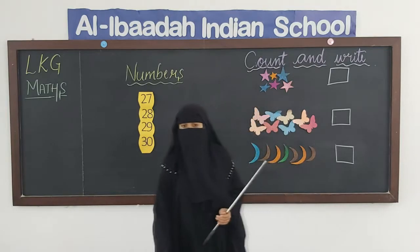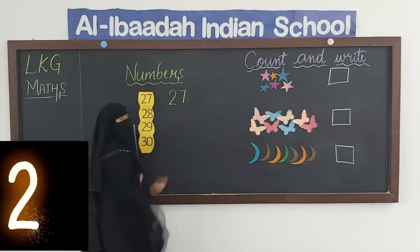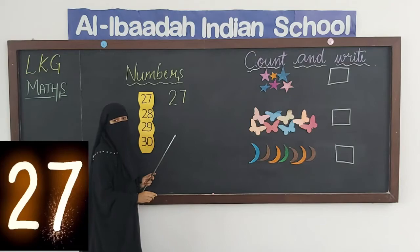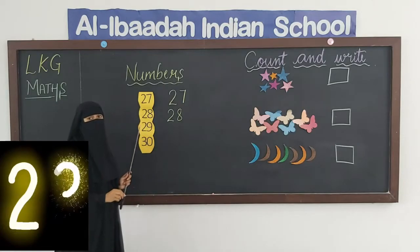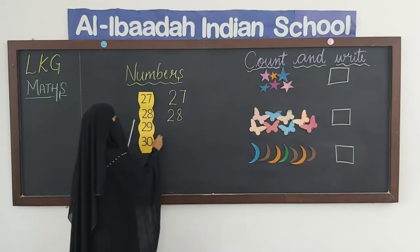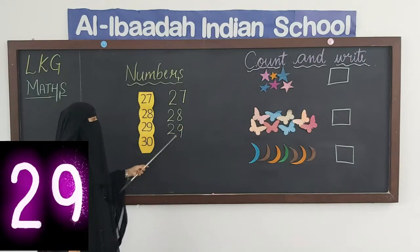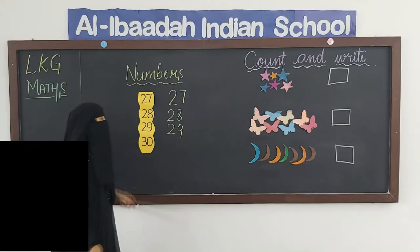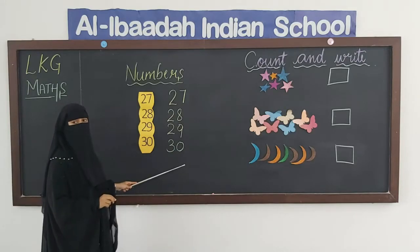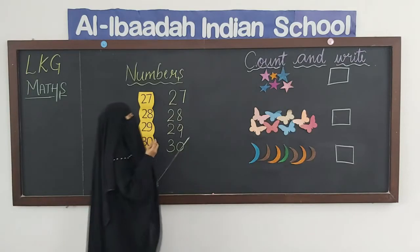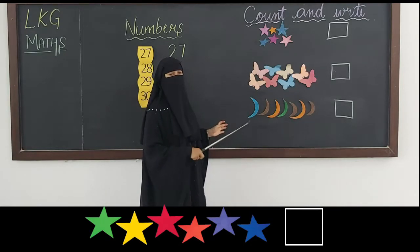Now let me show you how to write the numbers. 27 makes 27. 28 makes 28. 29 makes 29. 30 makes 30.